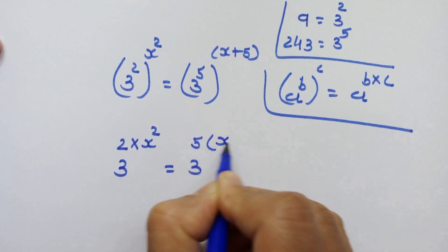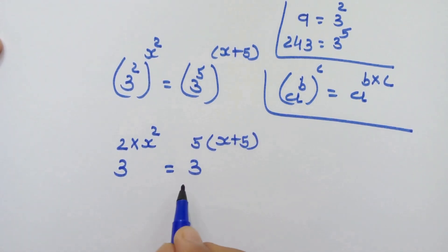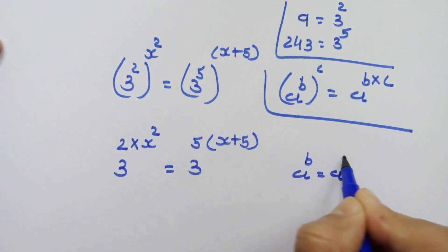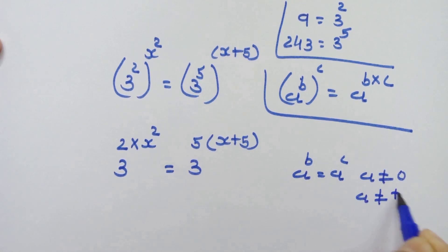We have the same base on both sides. So if a^b = a^c, where a is not equal to 0 and a is not equal to plus or minus 1, then we can write b = c.